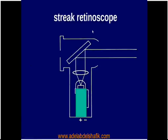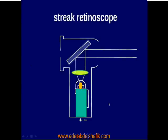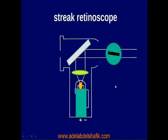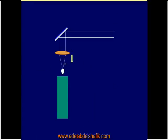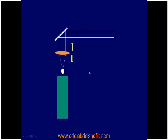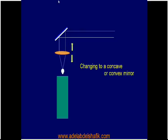The streak retinoscope is formed of these parts, and we can change the mirror to be plane, concave, or convex by moving the internal lens slightly up or down — closer to or further from the source of light.